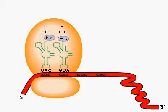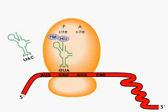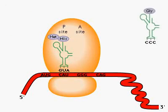The amino acid at the p-site is transferred to the A-site. The ribosome moves down one codon, releasing the empty tRNA.